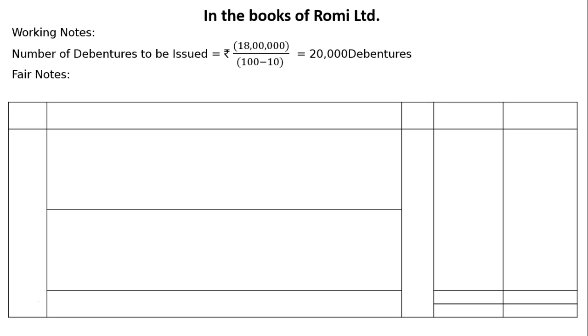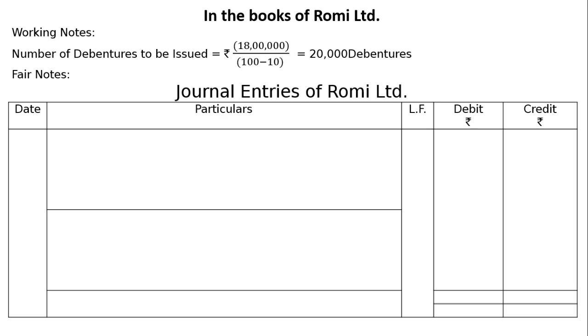Journal entries of Romy Ltd. We have to write down: date, particulars, ledger folio, debit and credit with Rs. symbols.